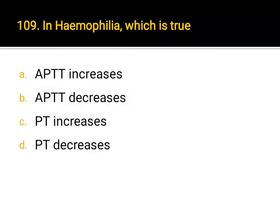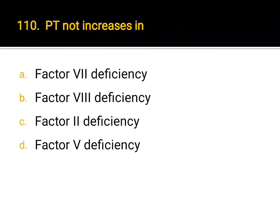In hemophilia, which is true? A. APTT increases, B. APTT decreases, C. PT increases, D. PT decreases. Correct answer: APTT increases. PT does not increase in: A. Factor 7 deficiency, B. Factor 8 deficiency, C. Factor 2 deficiency, D. Factor 5 deficiency. Correct answer: B. Factor 8 deficiency.